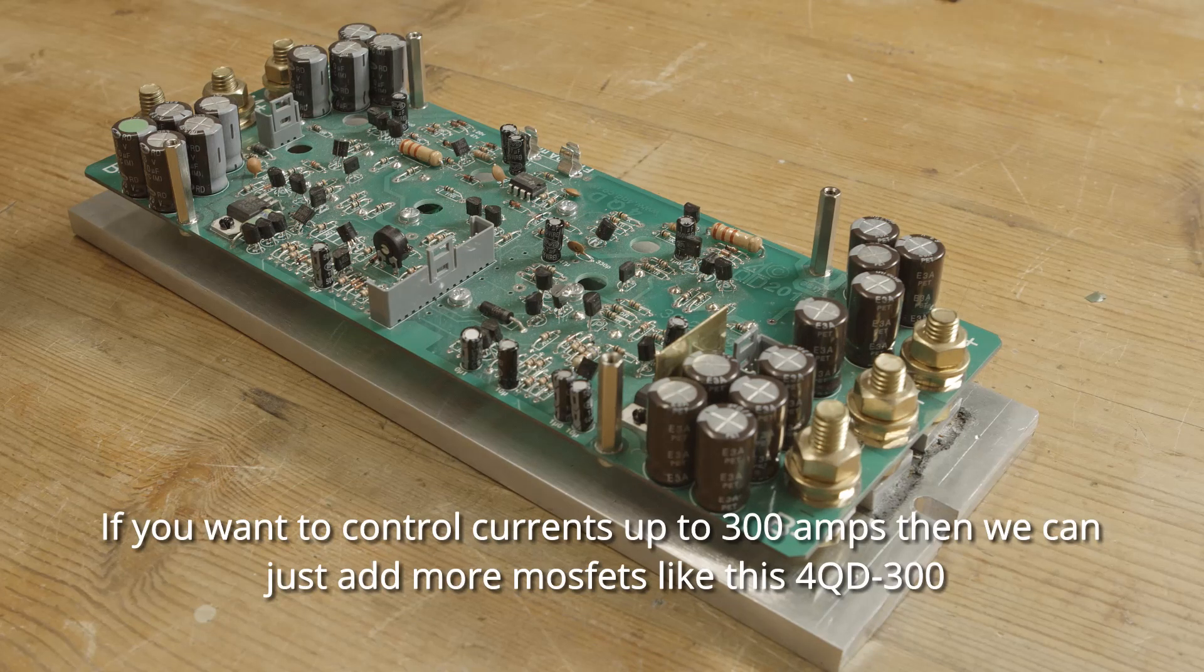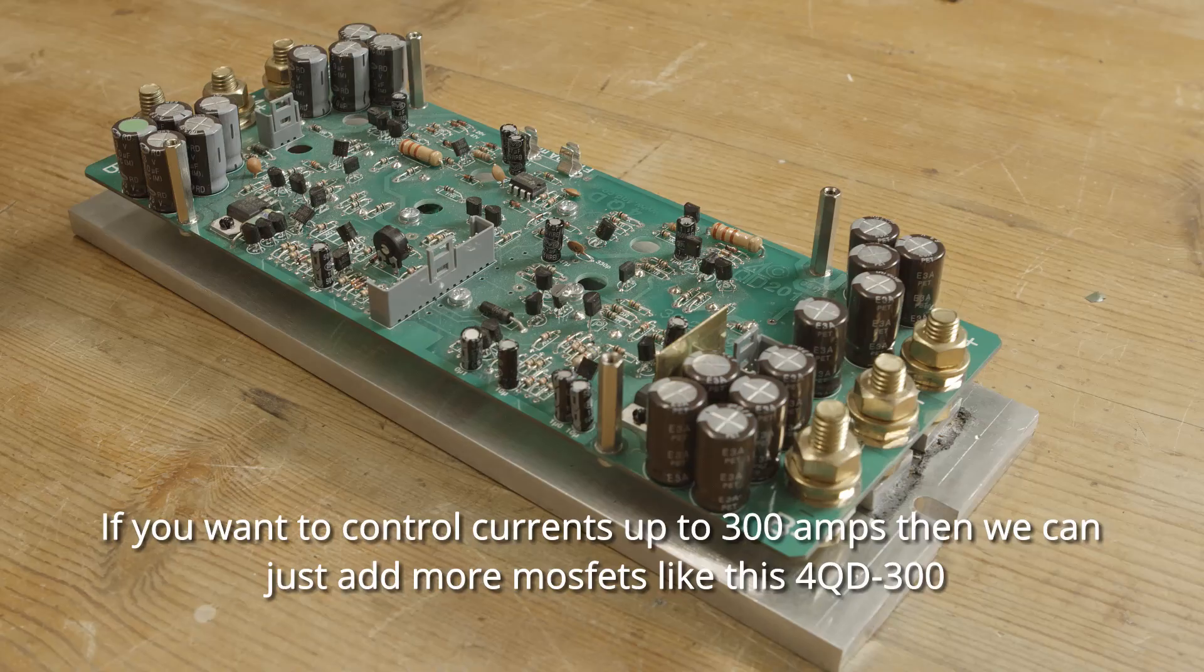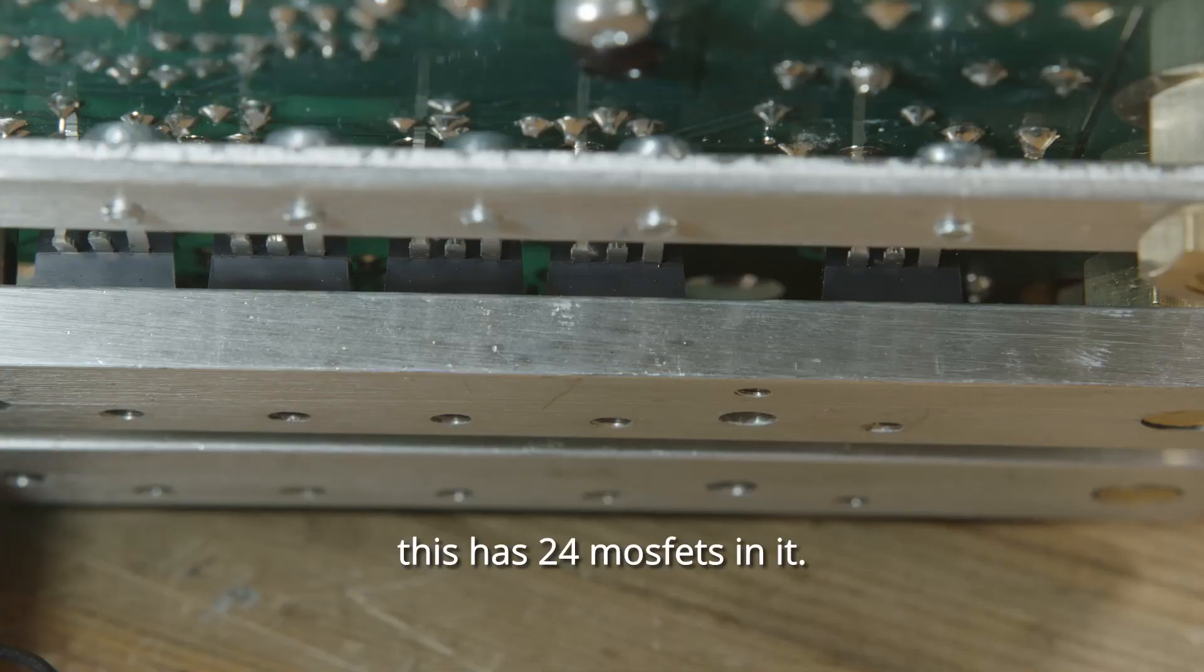If you want to control currents up to 300 amps, then we can just add more MOSFETs, like this 4QD300. This has 24 MOSFETs in it.